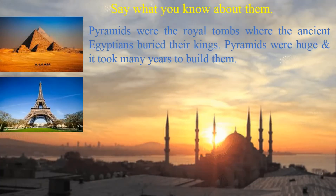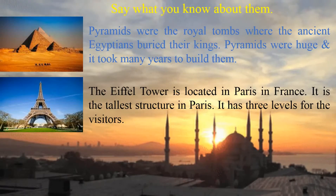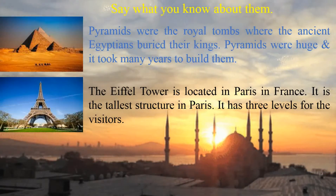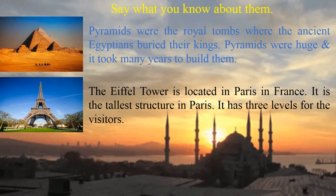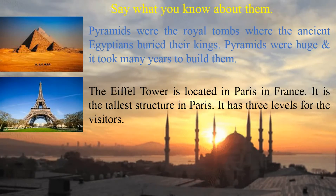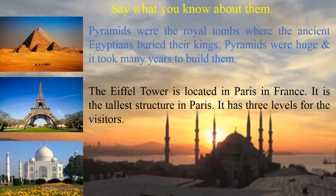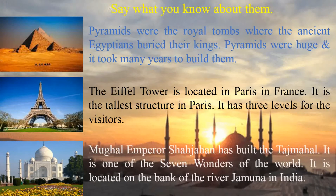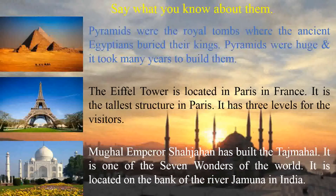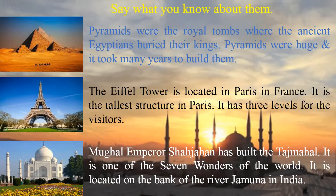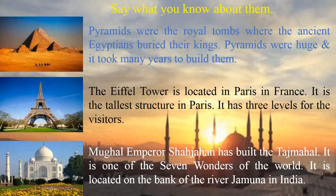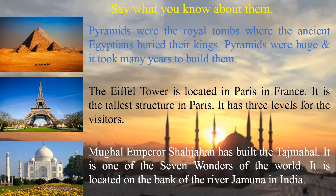This is Eiffel Tower. The Eiffel Tower is located in Paris, in France. It is the tallest structure in Paris. It has three levels for the visitors. And this is Taj Mahal. Mughal Emperor Shah Jahan has built the Taj Mahal. It is one of the seven wonders of the world. It is located on the bank of river Jamuna in India.